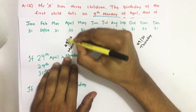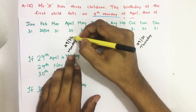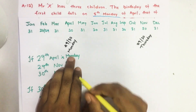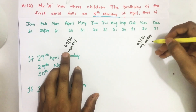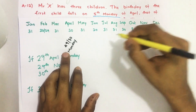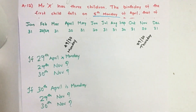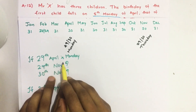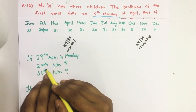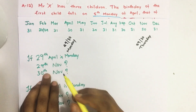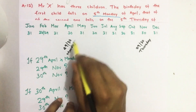So here we found that the first child's birthday will be either on 29th or 30th April. So which of these 2 days is satisfying a 5th Thursday in November? That will determine the birthday of the first child. So if 29th April is Monday, then first we are finding on which day it will be 29th November. Let us see.